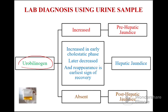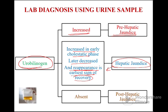Detection of urobilinogen in urine: if urobilinogen is increased, that indicates pre-hepatic jaundice. If urobilinogen is increased in the early cholestatic phase, later decreased, and then shows reappearance, that indicates hepatic jaundice — and reappearance of urobilinogen in hepatic jaundice is the earliest sign of recovery. If urobilinogen is absent, that indicates post-hepatic jaundice.